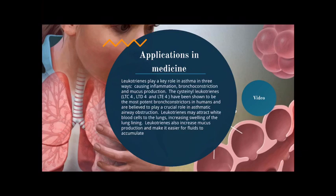Leukotrienes may attract white blood cells to the lungs, increasing swelling of the lung lining. Finally, leukotrienes also increase mucus production and make it easier for fluids to accumulate.